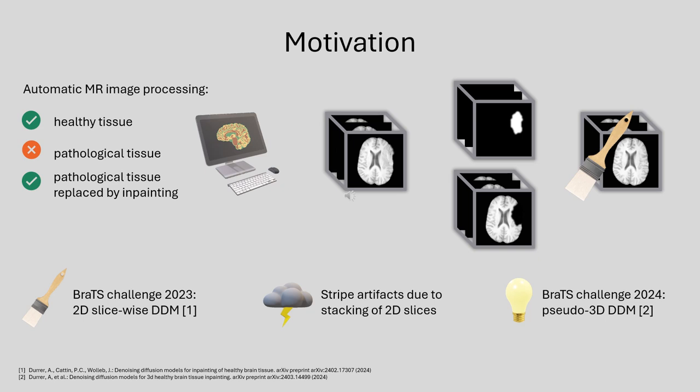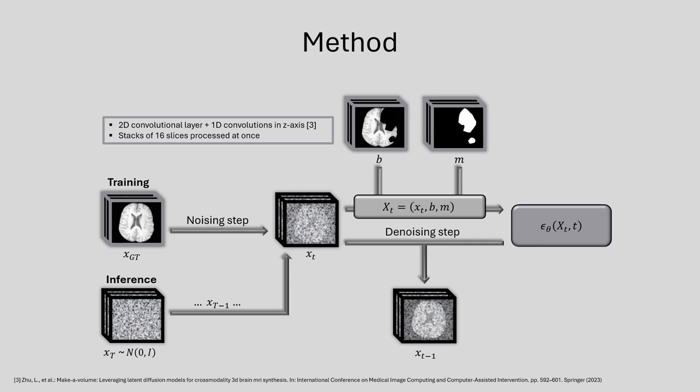I will show the QR code to get to this paper on the last slide of this presentation. In this year's challenge, we participate by using a pseudo-3D DDM. The pseudo-3D convolutions result from 2D convolutional layers followed by 1D convolutions in the z-axis. These allow us to process the information of several slices at once.